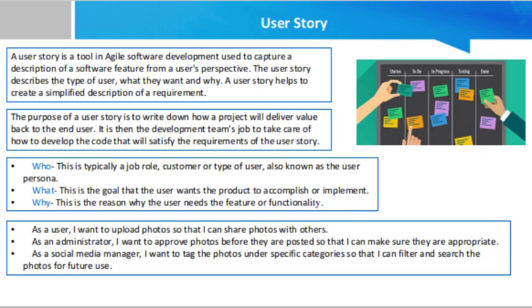Estimable — if you can't estimate a story, it means you don't yet understand the scope well enough, or the scope is too big to estimate easily. You don't need exact estimates, but when you can estimate a story it's also more negotiable, and you'll be able to differentiate between valuable low-effort and not-so-valuable high-effort stories. Small — you want the effort to implement a user story to be small, at most a few weeks by one person, though many teams use a few days as their limit. Smaller stories are easier to estimate; bigger stories are harder to estimate and thus less negotiable.